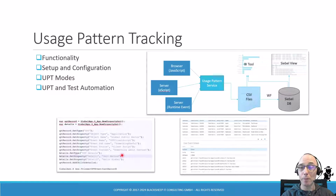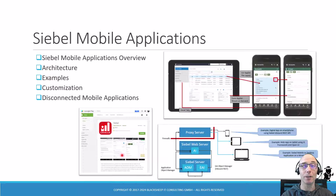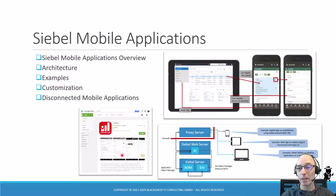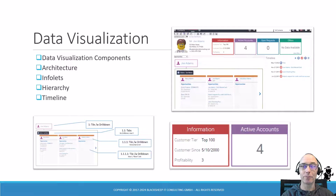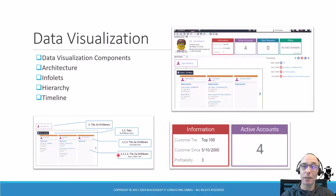You will learn about usage pattern tracking, which is a valuable tool to monitor usage patterns. Siebel mobile applications allow you to quickly deploy Siebel application data and functionality to mobile devices, so check out that chapter if you're interested. And last but not least, data visualization — added in version 22.5 — is included in our always up-to-date training.